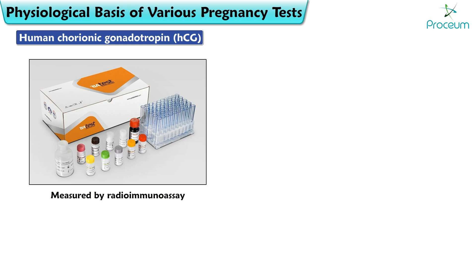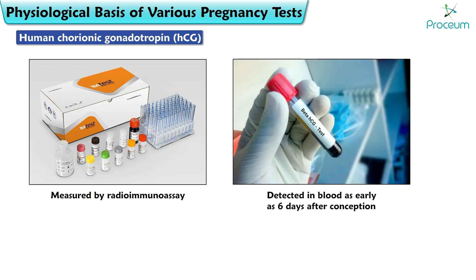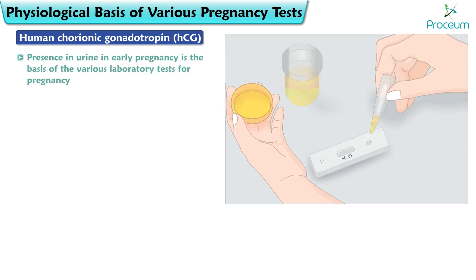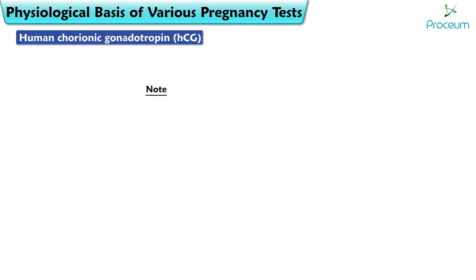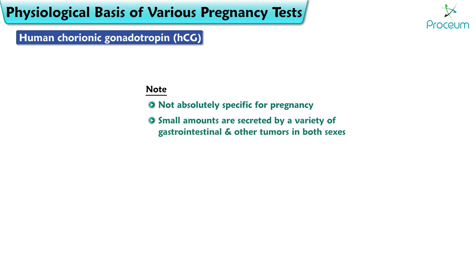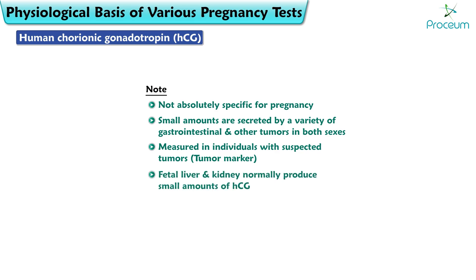Human chorionic gonadotropin can be measured by radioimmunoassay and detected in the blood as early as 6 days after conception. Its presence in the urine in early pregnancy is the basis of various laboratory tests for pregnancy, and it can sometimes be detected in the urine as early as 14 days after conception. It appears to act on the same receptor as luteinizing hormone. HCG is not absolutely specific for pregnancy; small amounts are secreted by gastrointestinal and other tumors in both sexes and has been measured as a tumor marker. The fetal liver and kidney also normally produce small amounts of HCG.